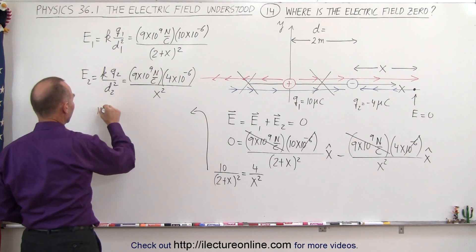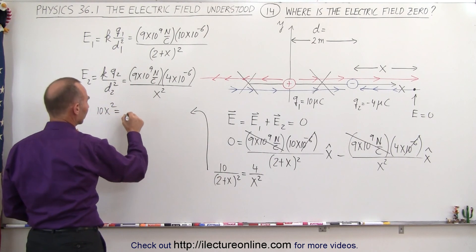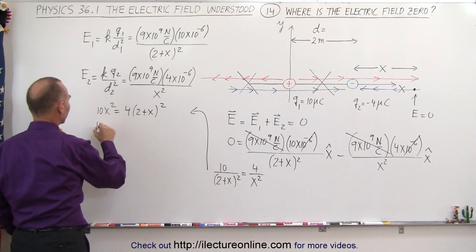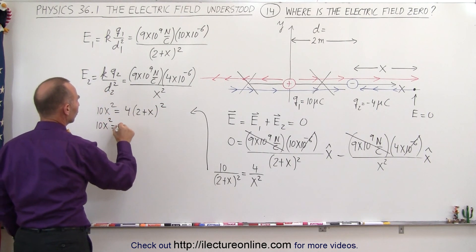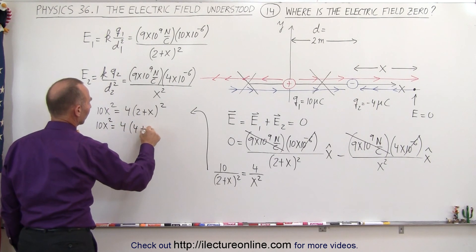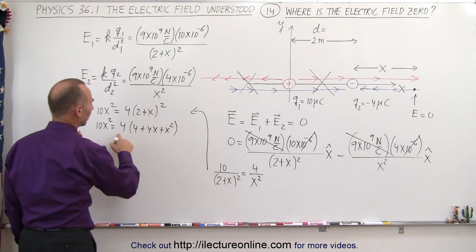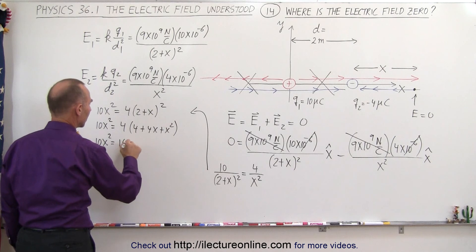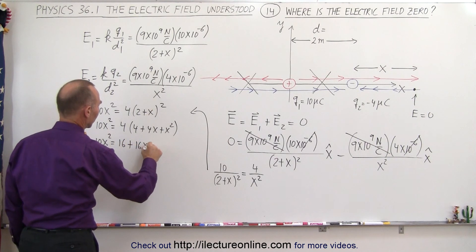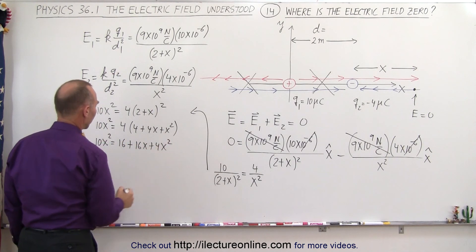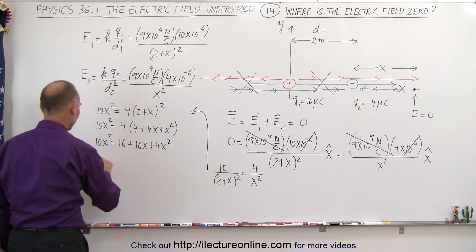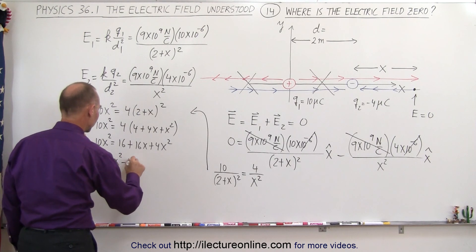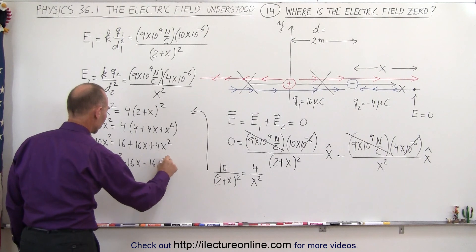Cross-multiplying gives us 10x² on the left and 4 times (2+x)² on the right. Working everything out: 10x² = 4(4 + 4x + x²), which expands to 10x² = 16 + 16x + 4x². Moving everything to one side: 6x² − 16x − 16 = 0.